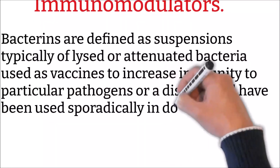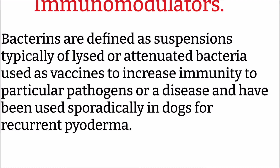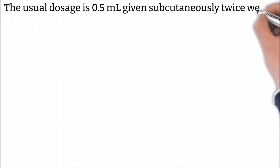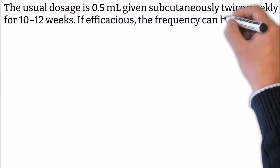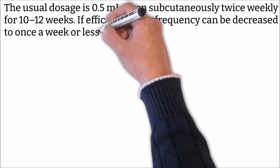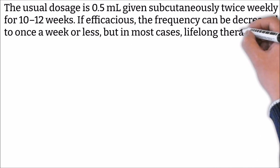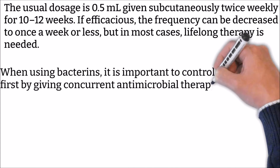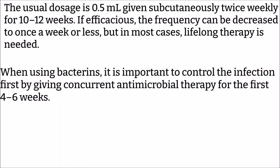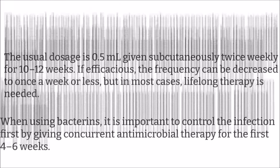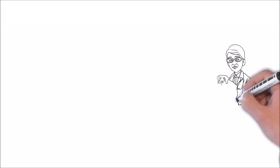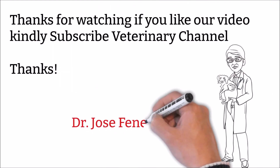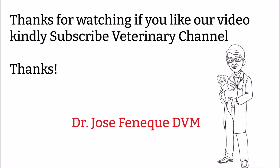Immunomodulators. Bacterins are defined as suspensions of lysed or attenuated bacteria used as vaccines to increase immunity to particular pathogens, and have been used sporadically in dogs for recurrent pyoderma. The usual dosage is 0.5 ml given subcutaneously twice weekly for 10–12 weeks. If efficacious, the frequency can be decreased to once a week or less, but in most cases lifelong therapy is needed. When using bacterins, it is important to control the infection first by giving concurrent antimicrobial therapy for the first 4–6 weeks.